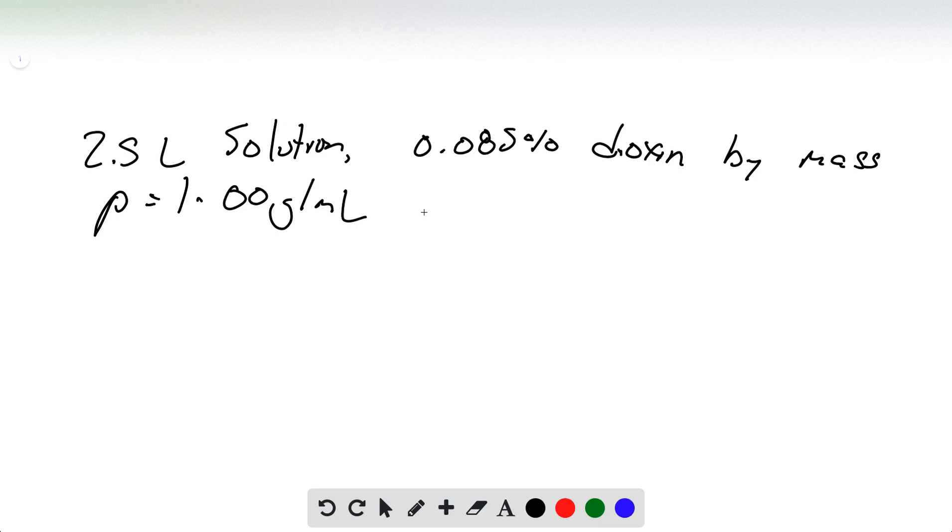Okay, so we have a 2.5-liter solution, 0.085% dioxin by mass, density equals 1.00 g/mL. How much dioxin is there?